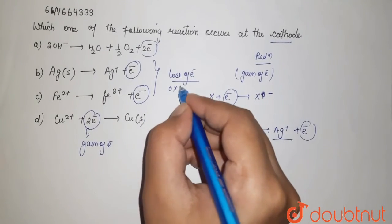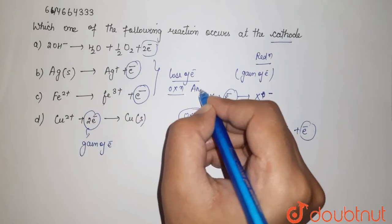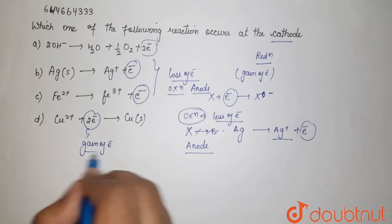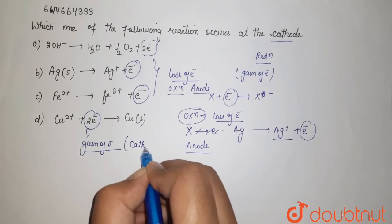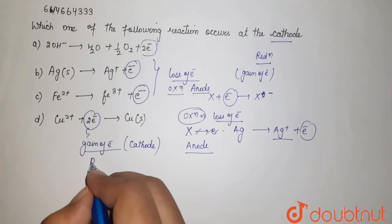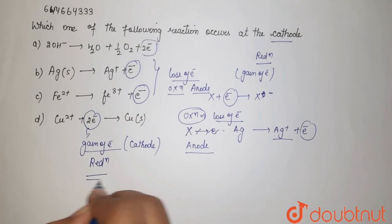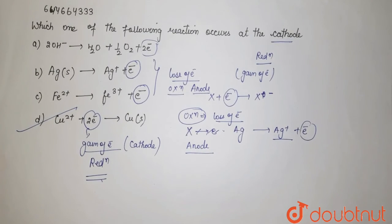So these are your oxidation reactions which happen on your anode compartment, and here we are having gain of electron that happens on your cathode compartment, and the process is known as your reduction process. So D option will be your final answer.